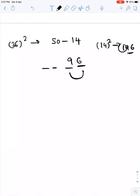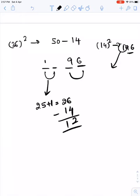So 96, and one will be carried forward. The other two digits will be 25 plus 1, that is 1 carried over, 26, and minus 14. So that will be 1296.